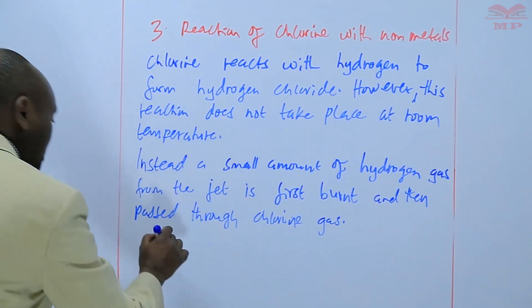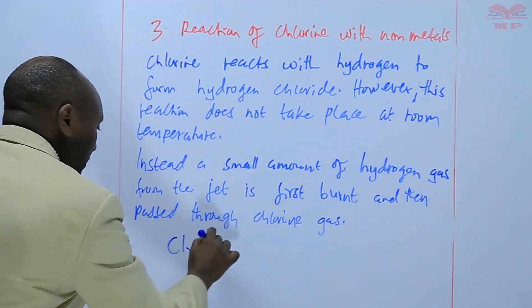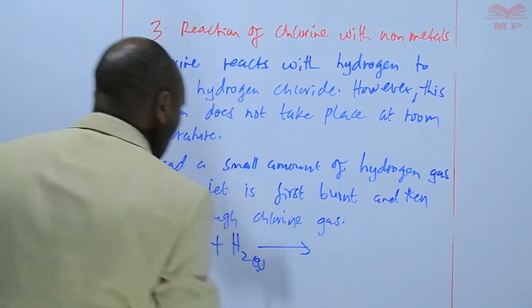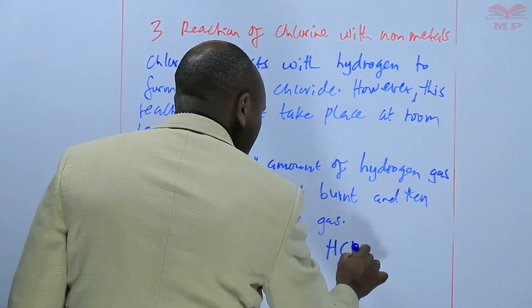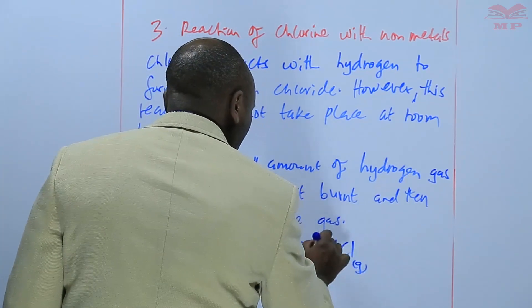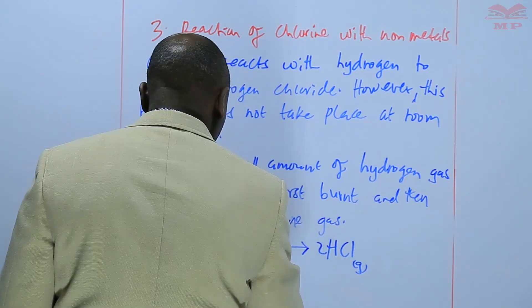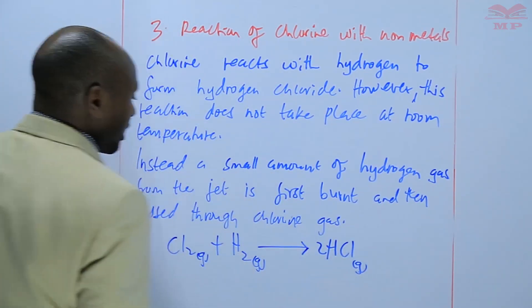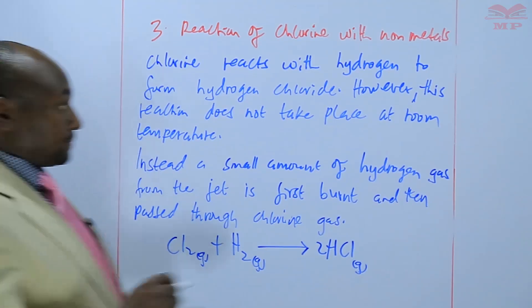So in this case, we are saying that chlorine gas plus hydrogen react to form hydrogen chloride gas, which is a colorless gas.